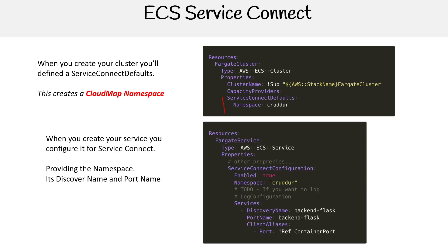When you create your service, you configure it for Service Connect. Here we see the Service Connect configuration — this is specifically for a Fargate service in CloudFormation. You can see we're defining it to be in a specific namespace, that it's enabled, we're telling it the discovery name and port name — which by the way, it says port name but it's actually the container name. I don't know why they call it that, I really don't like that.